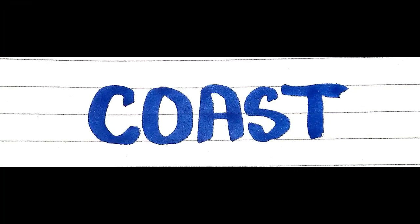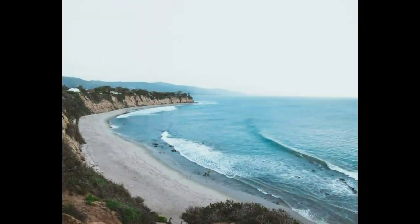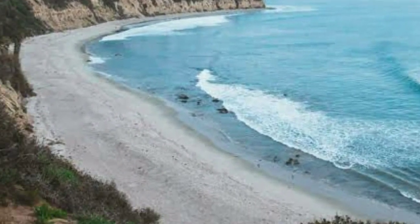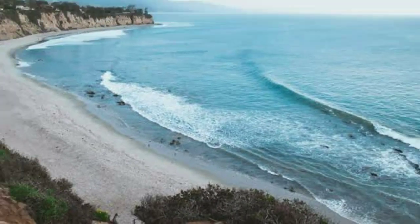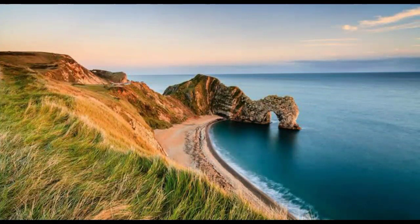What is the coast? The place where the land meets the sea is called the coast. By seeing this picture, we can imagine what a coast is — here, the land meets the sea. This place is called the coast.